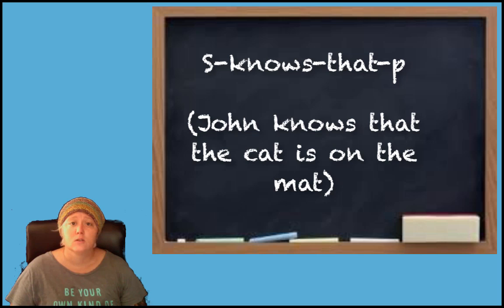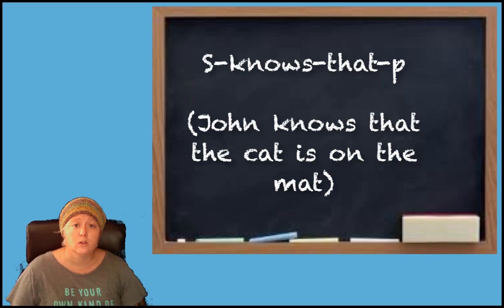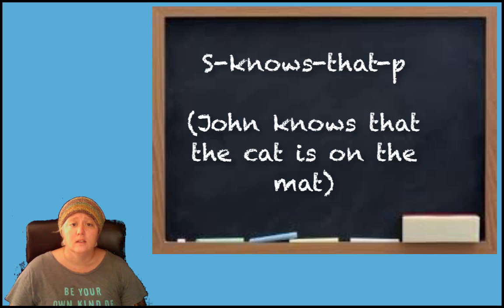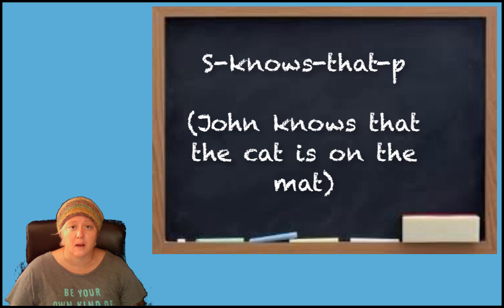Code is critiquing what is known as the S-knows-that-P model. This model simply means that some subject knows some proposition — for example, Johnny knows that the cat is on the mat, or Jill knows that John is at home. Some subject of knowledge is said to know some object of knowledge. The S-knows-that-P model is taken as paradigm, and on this model subjects are interchangeable: if John knows that the cat is on the mat, anyone else could also know that the cat is on the mat. Code is arguing that there is something problematic about taking the S-knows-that-P model to be paradigmatic of all kinds of knowledge.